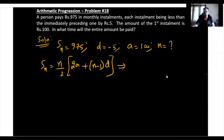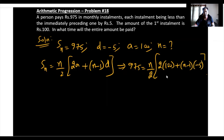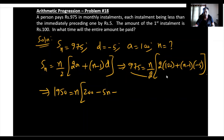So, 975 is equal to n by 2 times 2 times 100 plus n minus 1 times minus 5. Cross multiplying, 1950 is equal to n times 200 minus 5n plus 5.